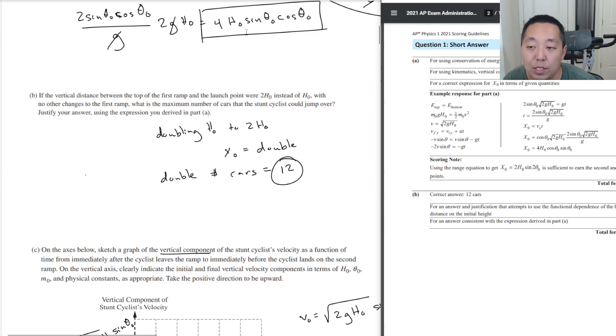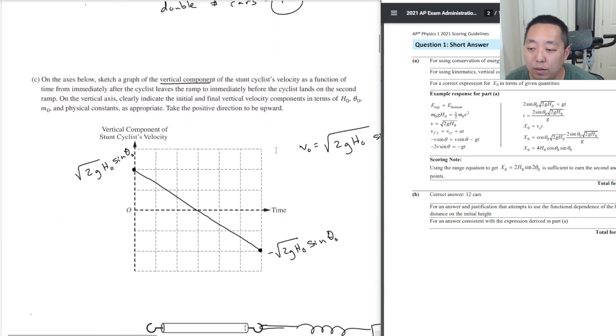For part B, if the vertical distance is doubled, you get 12. The correct answer is 12 cars here. One point for an answer, the justification attempts to use the functional dependence on the horizontal distance on initial height. And two, one point for an answer consistent with the expression derived in part A. This part is consistent. You don't get a point for getting 12, you got a point whether you had the correct dependency on the first equation you derived and whether you based it on h₀ or not.